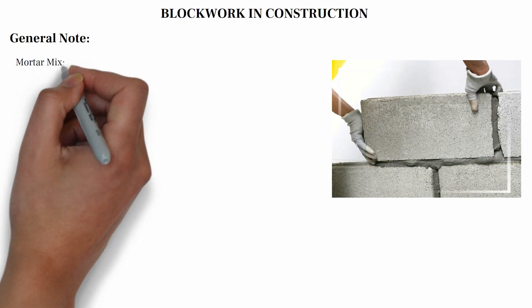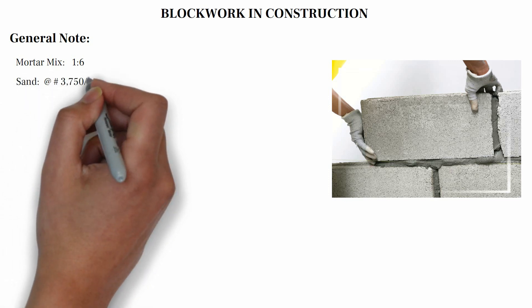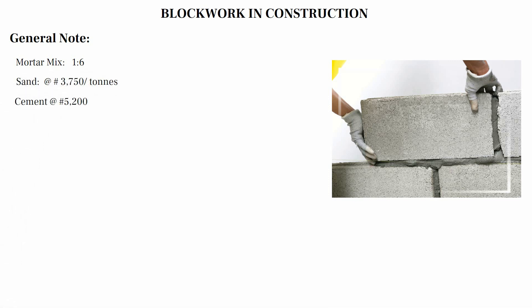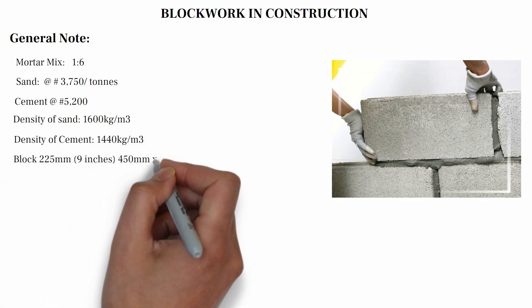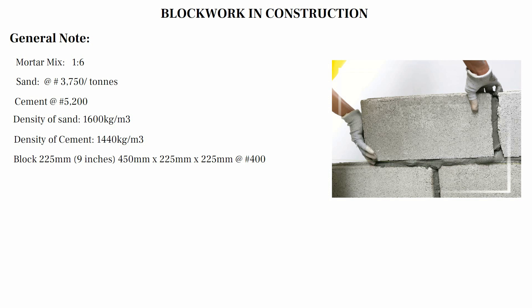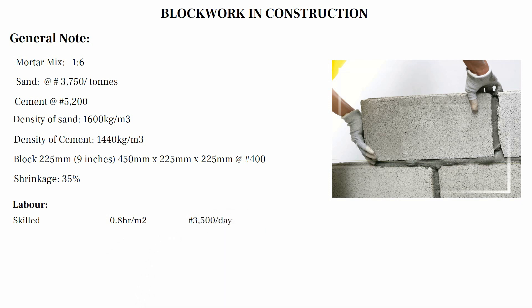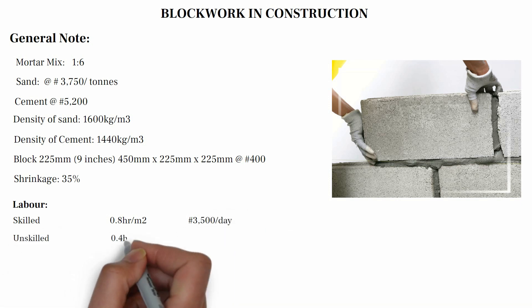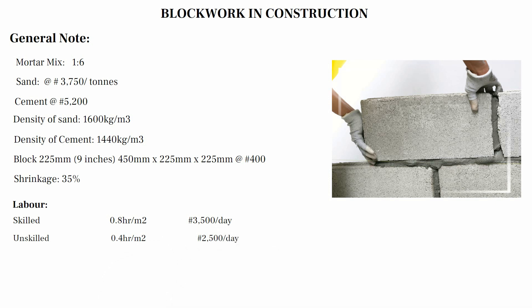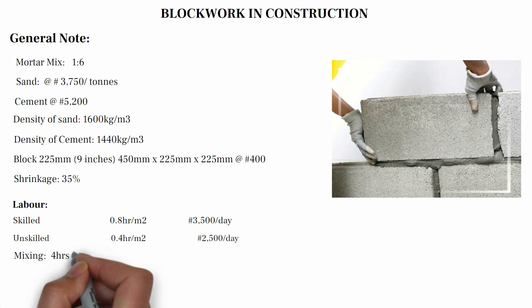General note: mortar mix ratio 1:6, sand at 3,750 Naira per ton, cement price 5,200 Naira per bag, density of sand 1,600 kg per meter cube, density of cement 1,440 kg per meter cube. Block 225mm (9 inches) with dimension 450mm by 225mm by 225mm at 400 Naira each. Shrinkage percentage 35%. Skilled labor is 0.8 hour per meter square at 3,500 Naira per day, unskilled labor is 0.4 hour per meter square at 2,500 Naira per day, mixing 4 hours per meter cube.